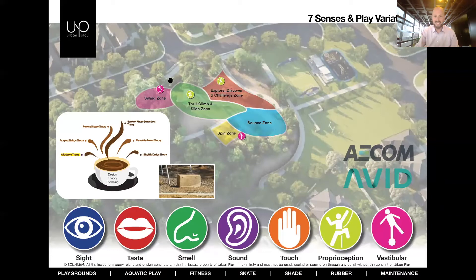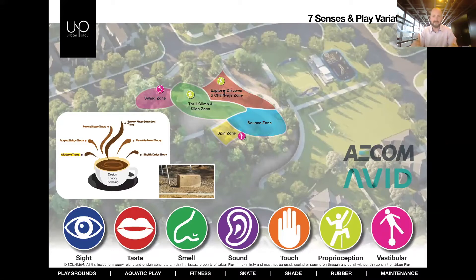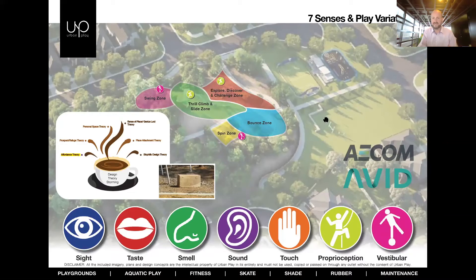A double slide is a non-negotiable design element: kids with sensory processing disorders sometimes need more time on the platform before sliding. If another child pressures them and they feel intimidated, they'll never come back. With a double slide, someone can come down with them or pass by, providing a safer space to engage. Beyond that: a spin zone, bouncing zone and fitness engagement space, ensuring social-emotional, physical and cognitive play affordances throughout.